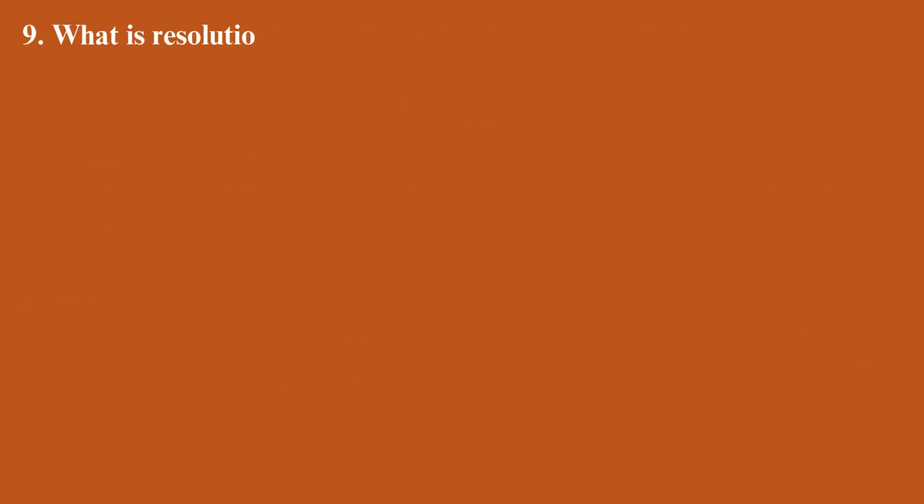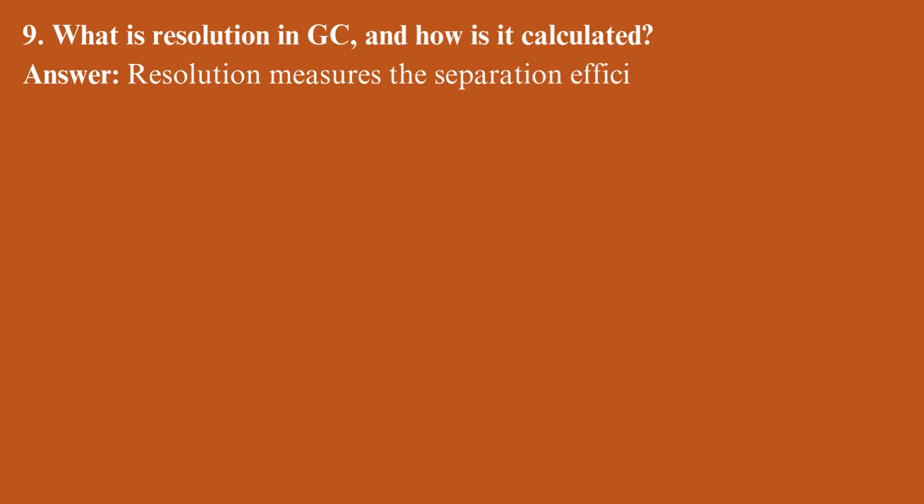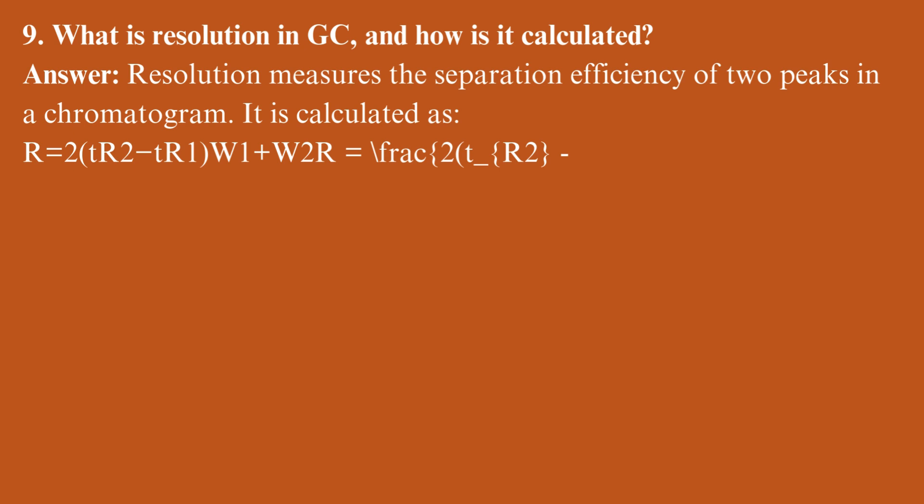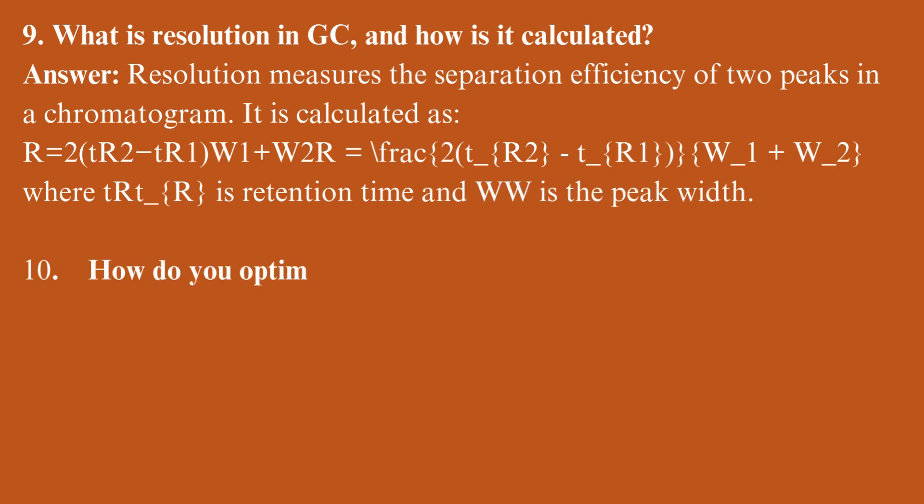What is resolution in GC, and how is it calculated? Resolution measures the separation efficiency of two peaks in a chromatogram. It is calculated as: R equals 2(TR2 minus TR1) / (W1 + W2), where TR is retention time and W is the peak width.